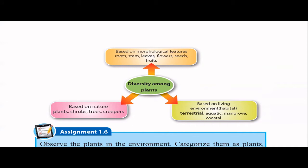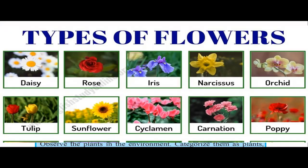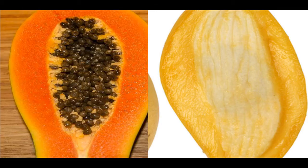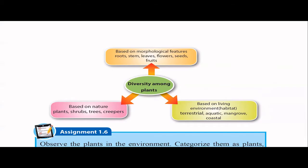Flowers also show diversity — based on the number of petals, color, and fragrance, we can have many varieties. Then come fruits and seeds. For example, mango has only one seed, but papaya and passion fruit have so many seeds we cannot even count them. So based on structural features, we can differentiate trees.